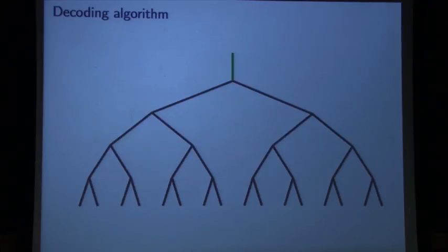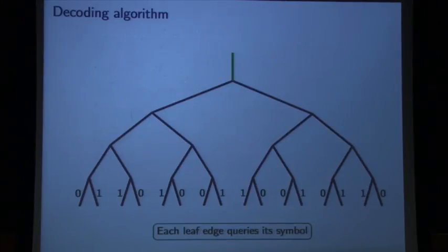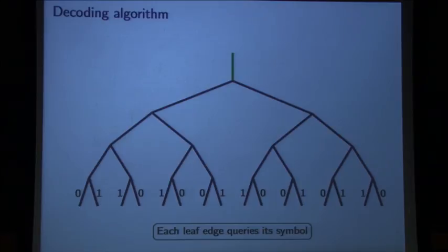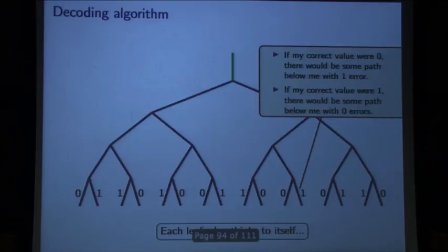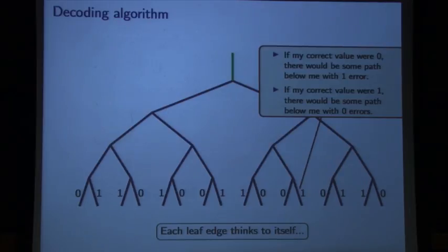The decoding algorithm then counts, starting from the bottom: you count the length of the longest error path you would need to get this green edge's value. Each edge passes the shortest path-error-length for each possible value up to its parent. So the decoding ultimately just goes up the tree counting the shortest path of errors you'd need to get any specific value on any edge.